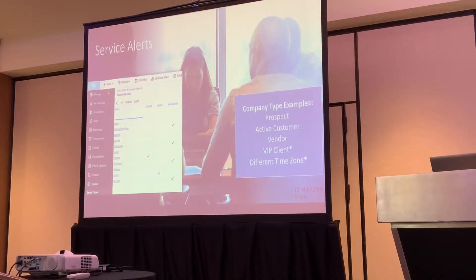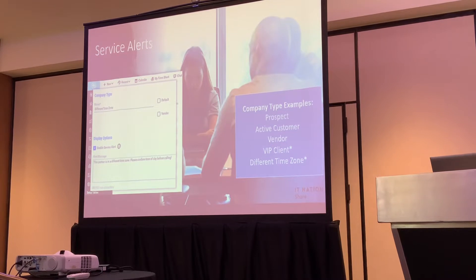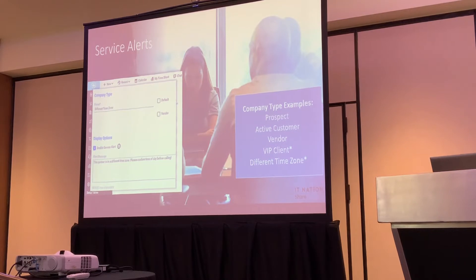You set up company types from the setup table. Examples include prospect, active customer, and vendor. VIP and different time zone are company types that would benefit from a service alert. In the company type setup, there's a checkbox for activating the service alert, and then a text box below where you can put in whatever information you want the tech to have at their fingertips when looking at a ticket for that client.